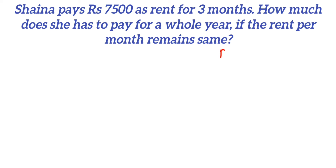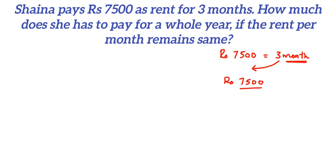In the question, it is given that Rs. 7500 — she is paying Rs. 7500 for 3 months. This is the easy way to understand which number to multiply and which number to divide. We have to find out for 1 month, so send this 3 to the other side. You have learned the transpose method — transpose the number and it goes to division. So 7500 divided by 3 will equal the rent for 1 month. Just equate them, and since we want to find out for 1 month, send the number to the other side. In this way, you can understand which number to divide by what number.